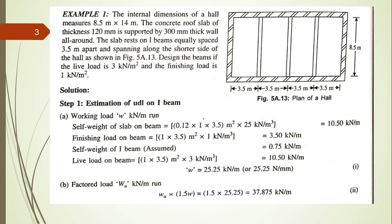Now let us solve today's problem. Note that in exams the sketch may not be given — you must draw it from the problem statement. The internal dimension of the hall is 8.5 m × 14 m. Take the longer side (14 m) as horizontal and the shorter side (8.5 m) as vertical. The beams span along the shorter side.